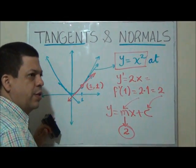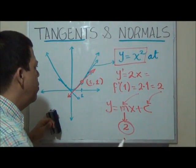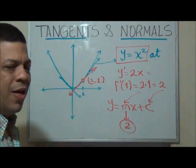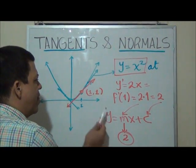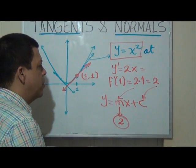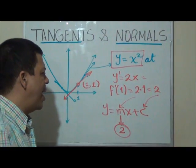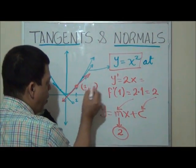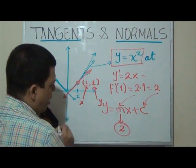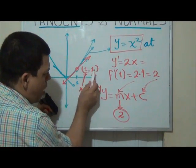Now I need to find the y-intercept. And to do that, I'm going to use the point that I had, 1,1. I know that the gradient is 2, and one of the points for that line is 1,1. Replacing this point into my line, remember that this is x and this is y. So replacing these two values, 1 and 1, I'm going to have something like 1 equals 2x plus c.